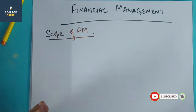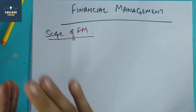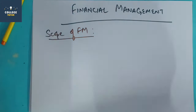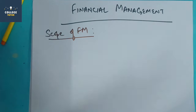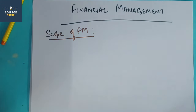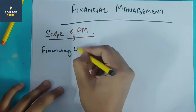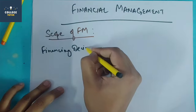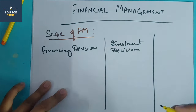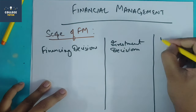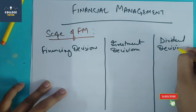In the exam, scope and functions may overlap — I will cover functions separately, but you can use these points for both. In the scope of financial management, we will study three things mainly: first, financing decisions; then investment decisions; and last, dividend decisions.